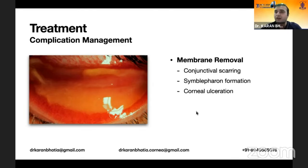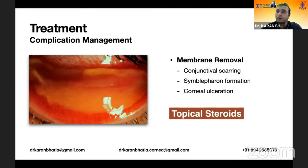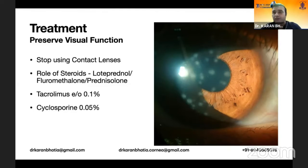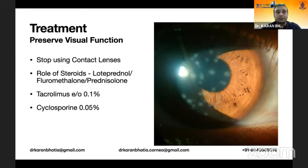Membrane removal causes a lot of discomfort if neglected. Topical steroids are definitely indicated in complication management. To preserve visual function, particularly in the subepithelial infiltrates or subepithelial keratitis phase, steroids are needed. Low-potency steroids like loteprednol or fluorometholone can be used, or even prednisolone or dexamethasone, but IOP must be monitored. Tacrolimus and cyclosporine drops have also been explored for this phase.